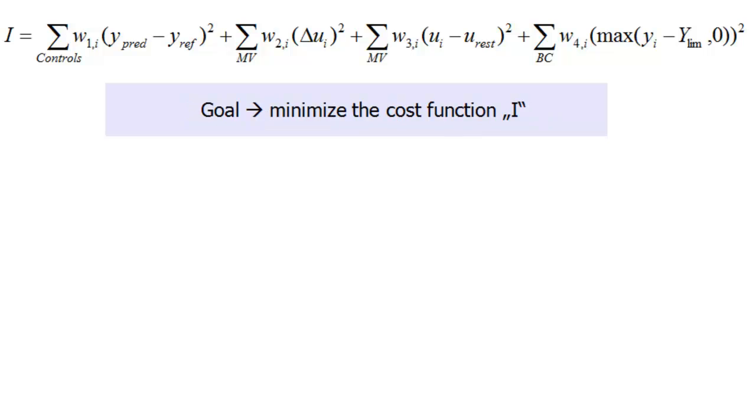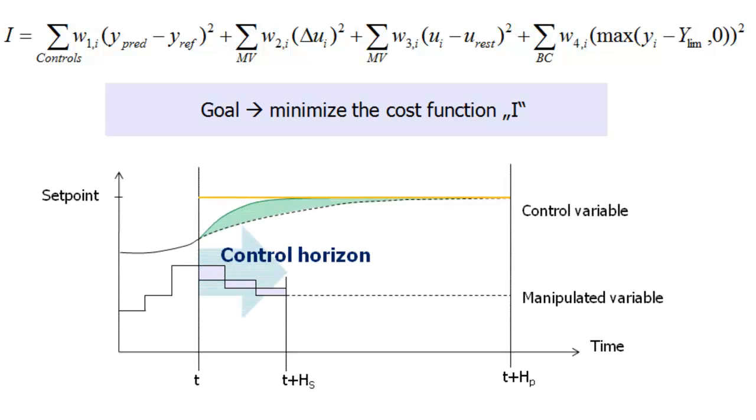As I mentioned before, the goal is to minimize the cost function. I optimize my controls for the control horizon by minimizing the cost function for the prediction horizon. At this point, the question begs itself, where do we get the predicted values of our control variables? For that, we need process models for the control variables.